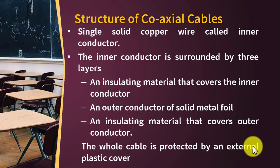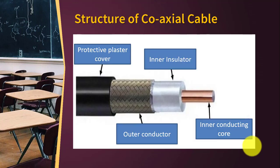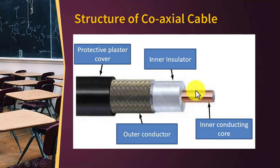Structure of coaxial cable. The single solid copper wire is called the inner conductor. You can see here, this is the inner conducting core — a single copper wire which is called the inner conductor.